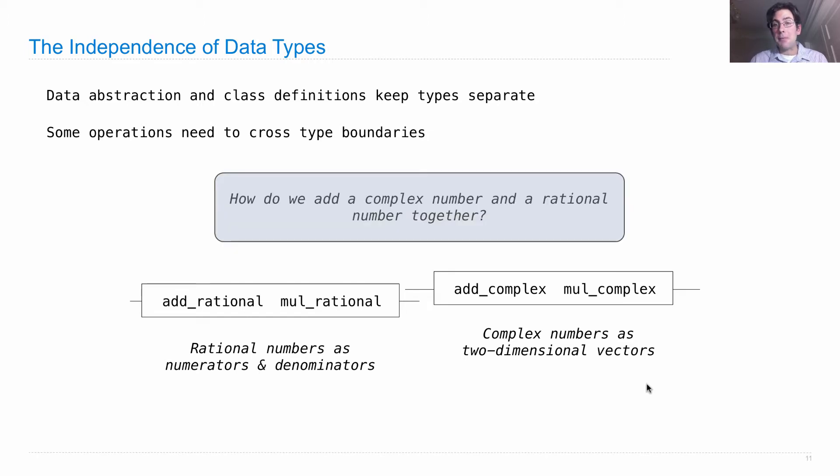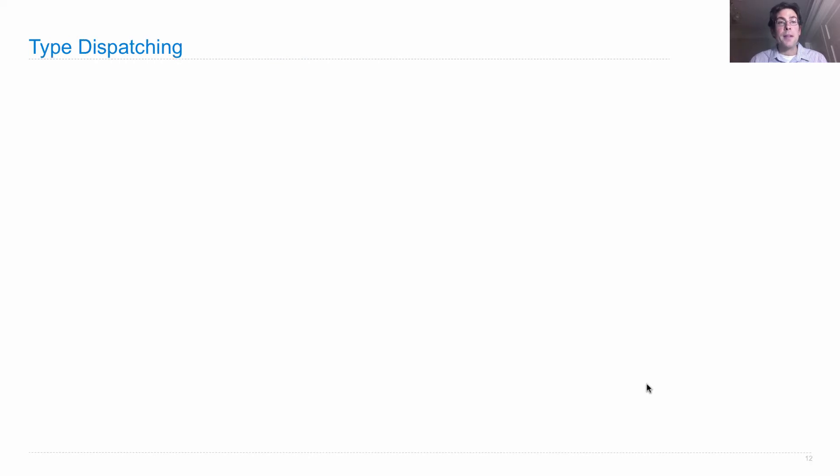So, how do we add complex and rational numbers together? Well, let's try to use type dispatching. There are many different techniques for doing this, but here's one.